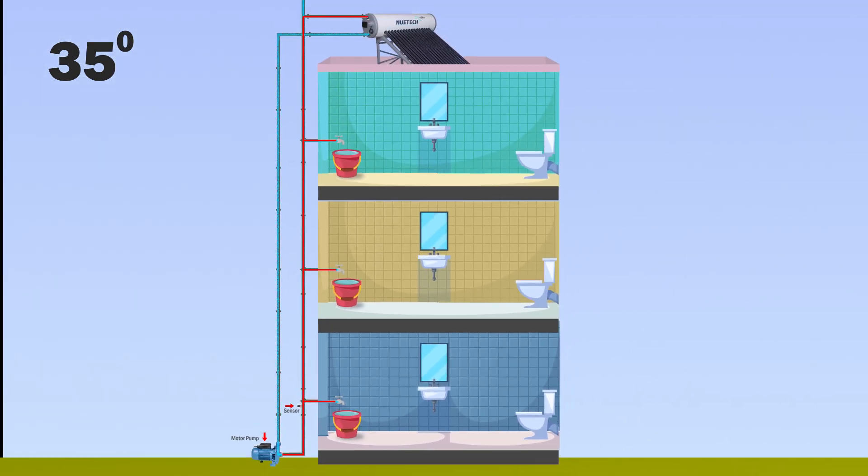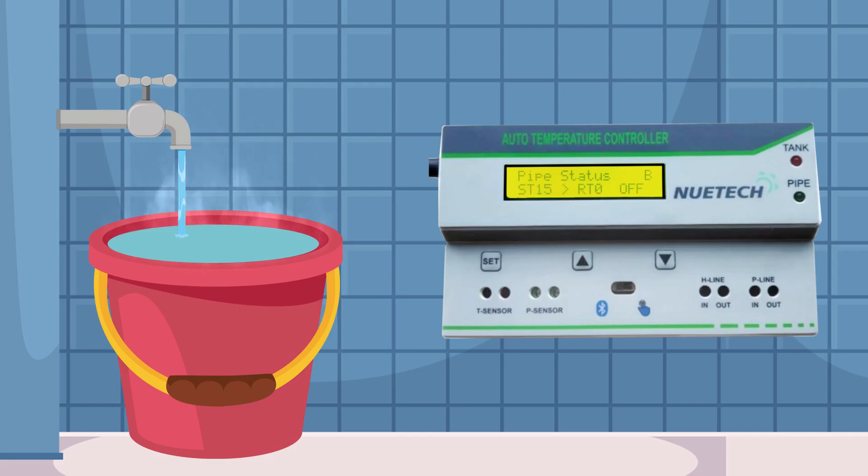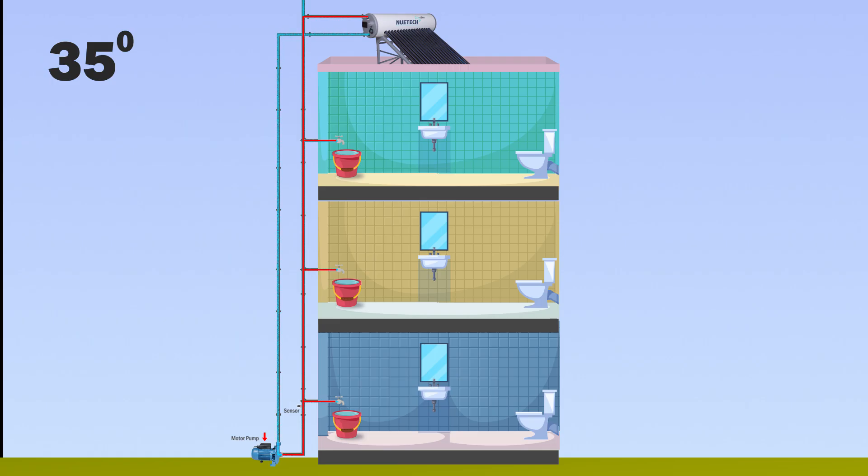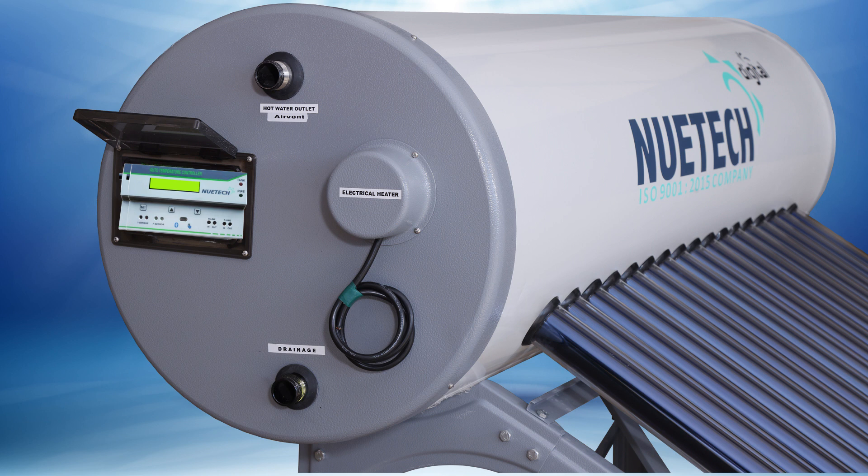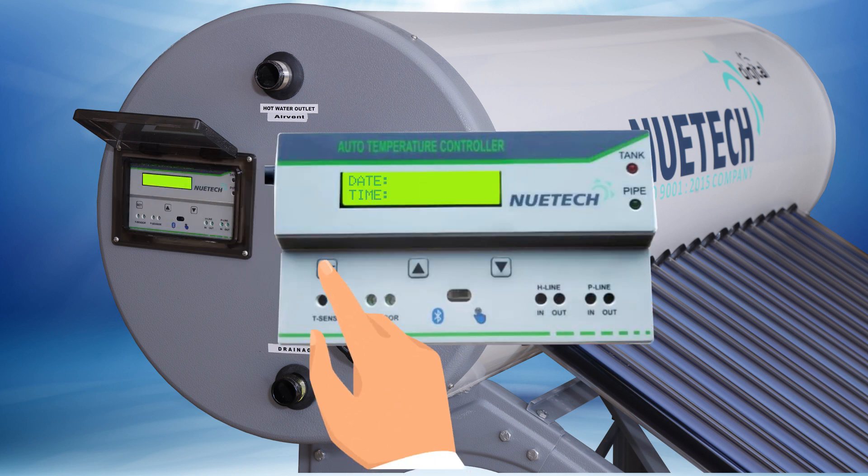Due to this continuous process, hot water is immediately available at the solar faucet without wasting water on multiple floors. The digital control system ensures uninterrupted hot water supply during bathing time.